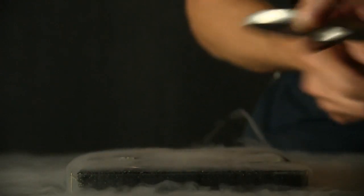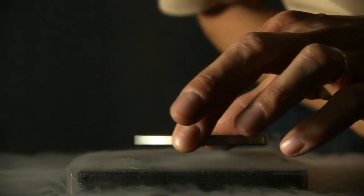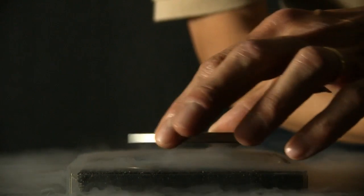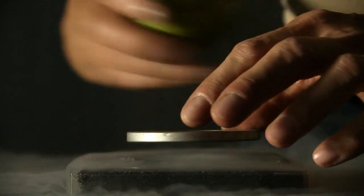And what I have here is a donut-shaped magnet, which I'm going to sit on top of the six pieces of the superconductor now.